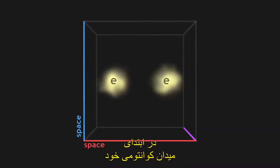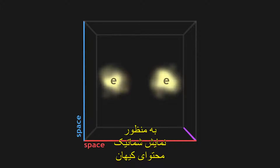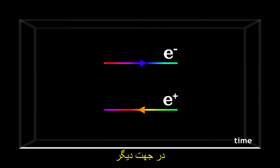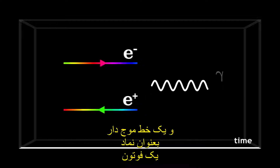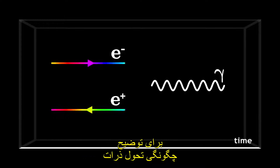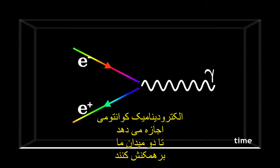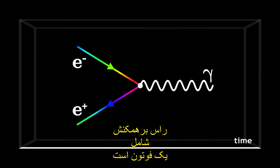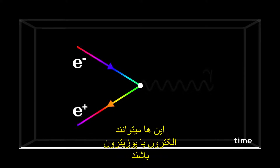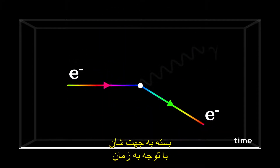To understand how electrons interact, imagine that we place two of them at the start of our quantum field. In order to schematically represent the content of the universe, it is convenient to use lines to symbolise the movement of particles: a line with an arrow towards the future to symbolise an electron, with an arrow towards the past in the other direction to symbolise a positron, and a wavy line to symbolise a photon. To describe how particles evolve, quantum electrodynamics allows our two fields to interact using interaction vertices — an interaction vertex involves a photon and two particles of the electron type.